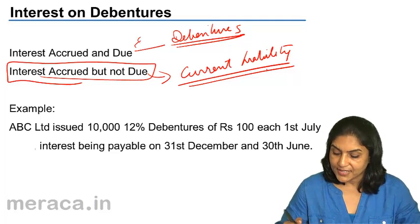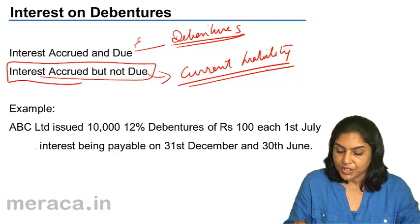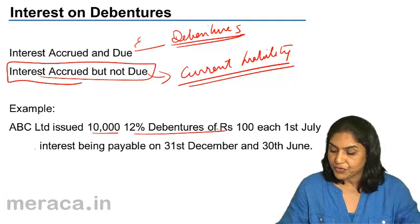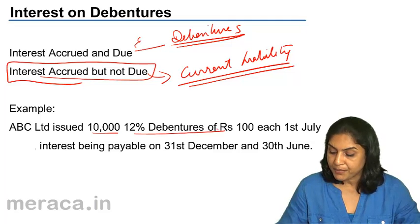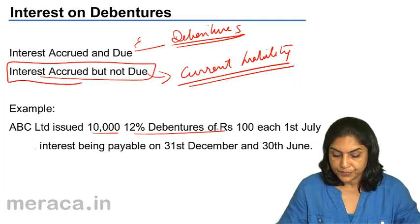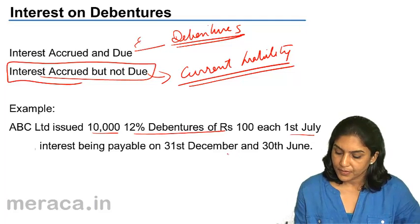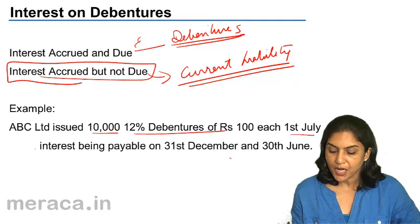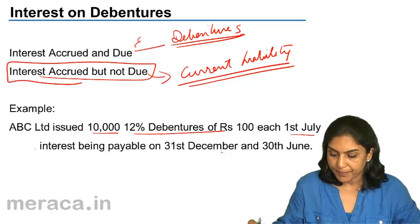Let us take this example. ABC Limited issued 10,000 12% debentures of ₹100 each on 1st July, and interest is payable on 31st December and 30th June. Now in this case, if the company closes its books on 31st March, let us see what happens.